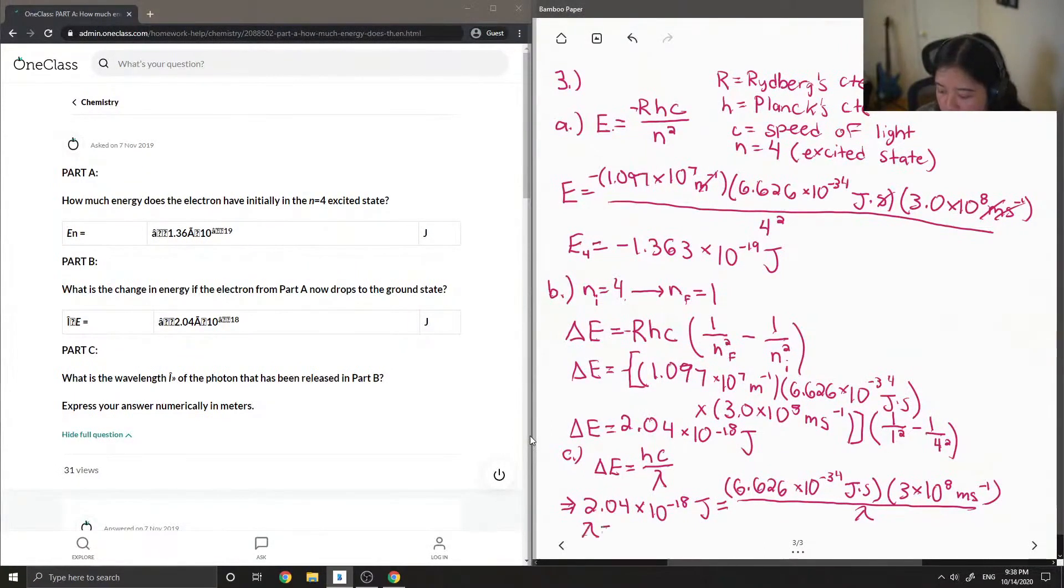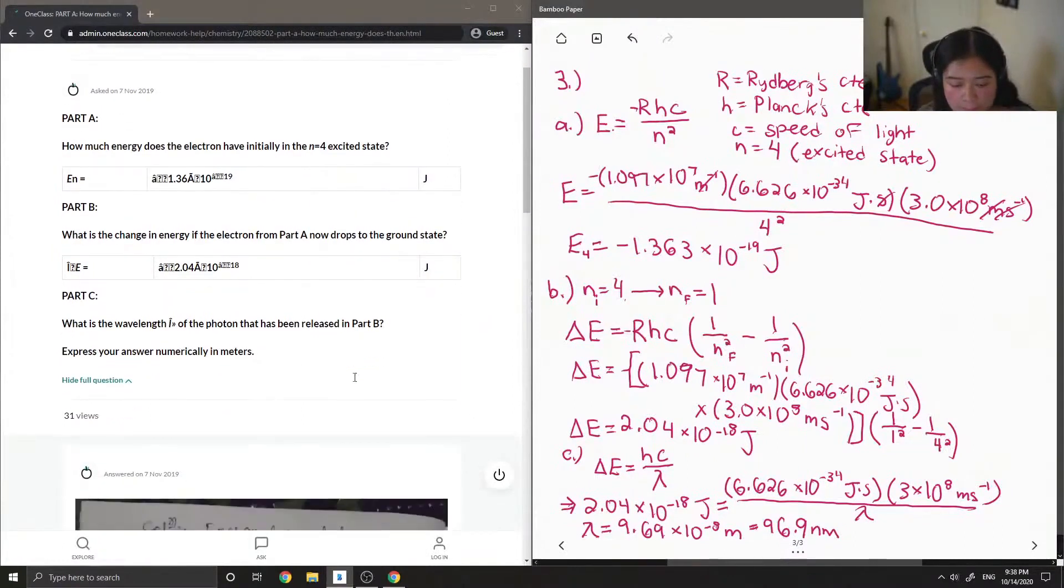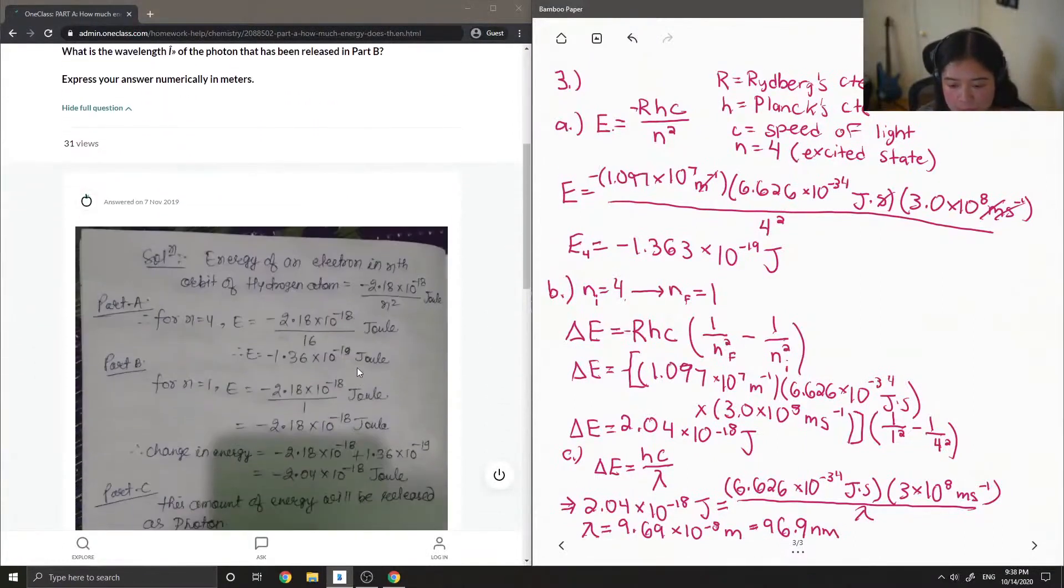All of that is over lambda, this is what we're trying to solve for. At the bottom here lambda ends up being 9.69 times 10 to the negative 8. The question asks express your answers in meters, but I'm still going to write this down in nanometers. So this would be 96.9 nanometers. So this is the amount of energy that will be released as a photon.